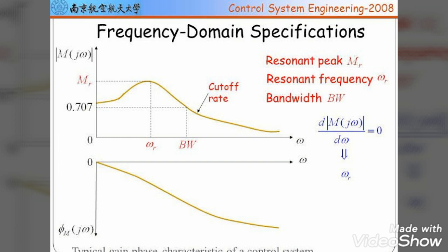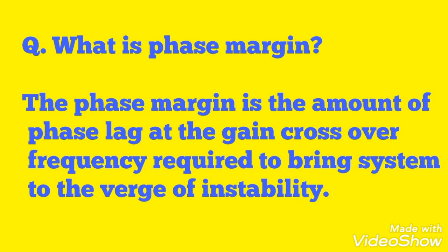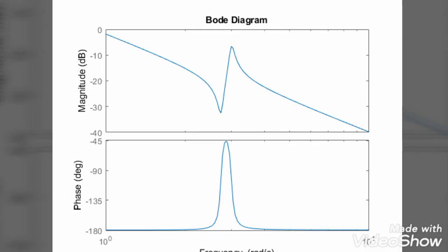Gain margin is defined as the reciprocal of the magnitude of the open loop transfer function at the phase crossover frequency. Phase margin is the amount of phase lag at the gain crossover frequency required to bring the system to the verge of instability. The Bode plot is a frequency response plot of the system transfer function with two graphs: the plot of magnitude of sinusoidal transfer function versus log ω, and the plot of the sinusoidal function phase. The Bode diagram shows both phase and magnitude.